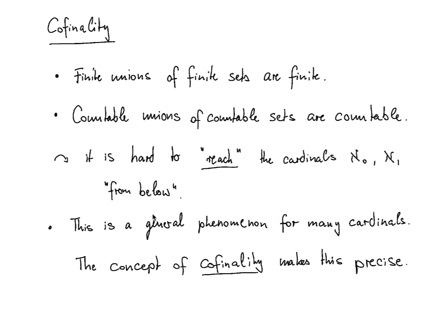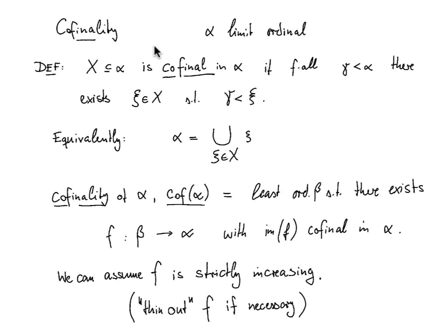In this lecture we're going to take a deeper look at the cardinal hierarchy — the alephs — and in particular how hard or easy they are to reach from below. We observe that finite unions of finite sets are finite, so it is hard to reach the infinite by taking unions in the finite realm. Similarly, countable unions of countable sets are countable, so it's hard to reach the uncountable by working in the countable realm. In terms of cardinals, it's hard to reach ℵ₀ and ℵ₁ from below, and the concept of cofinality makes this precise.